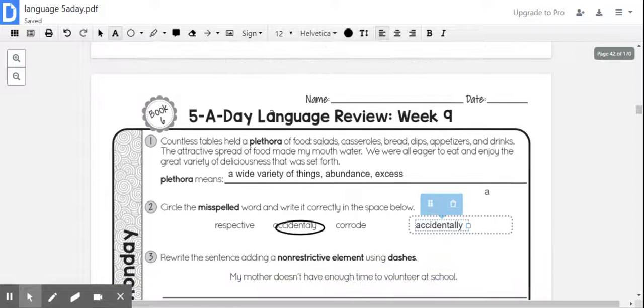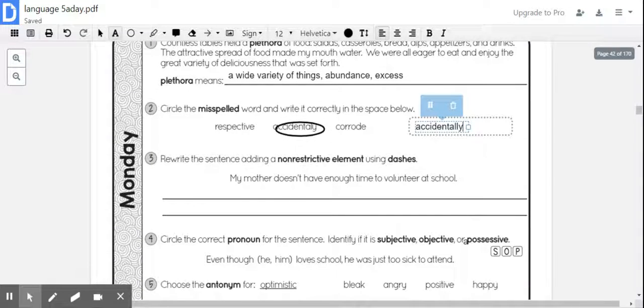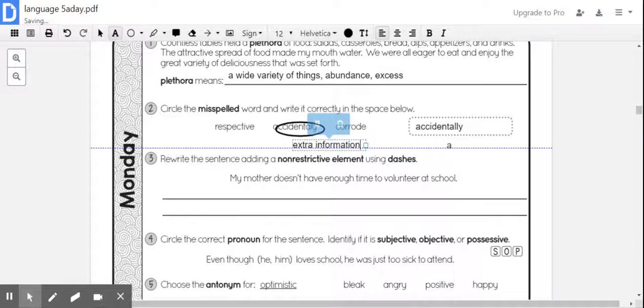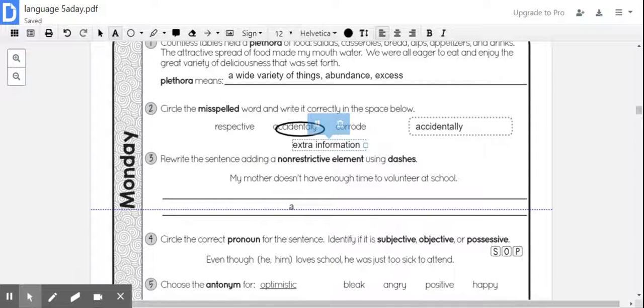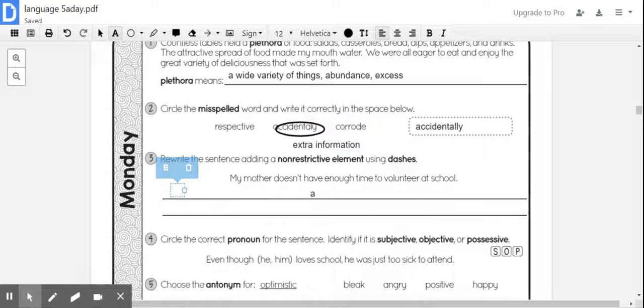Number three says: Rewrite the sentence adding a non-restrictive element using dashes. Remember, a non-restrictive element is going to be extra information added to your sentence. In this case we are using dashes. So it says, 'My mother doesn't have enough time to volunteer at school.' The extra information is going to be about your subject. In this case, the subject is my mother, so I will put my first dash right there. And because she doesn't have time...